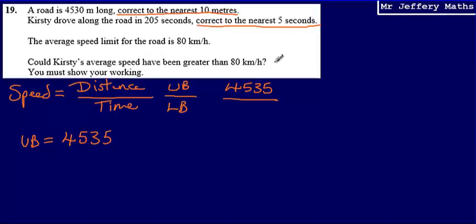The lower bound for time is 202.5 seconds. If she had achieved a time of 202.5 seconds and we were to round that to the nearest five, we would say that's 205. So the quickest that she could have done this in was 202.5 seconds, and the furthest distance that she could have travelled in 202.5 seconds would be 4535 metres.